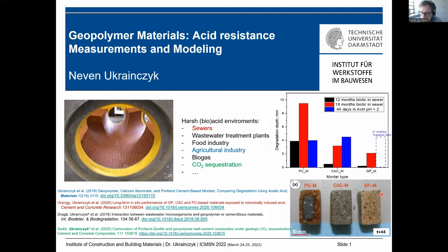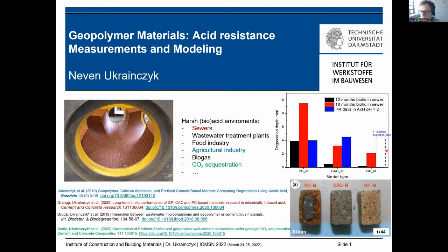We are developing new alkali silicate geopolymer-based mortars and concretes. Here I have plotted the degradation depth, and you can see that after 12 to 18 months of in-situ exposure to bio sewers, calcium aluminates have better performance than Portland cement, and geopolymers show even better performance. The only caveat is that they leach — after 44 days we observe alkali leaching from the transition zone — but the mechanical properties are retained up to a certain pH.